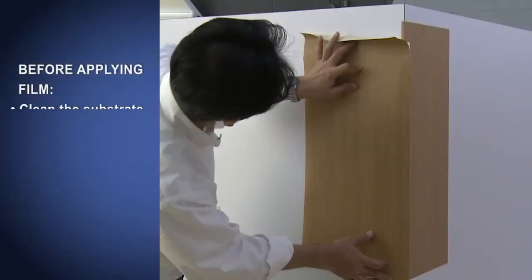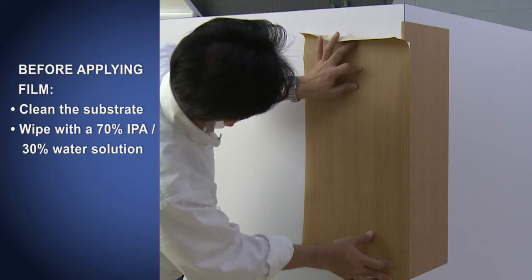Before applying the film, always clean the substrate to be sure it is free of dust and contaminants. Wipe with a solution of 70% isopropyl alcohol and 30% water and then wipe dry. Be sure your hands are clean and free of dirt and lotions to avoid contaminating the adhesive. And always work on a clean surface with clean tools.